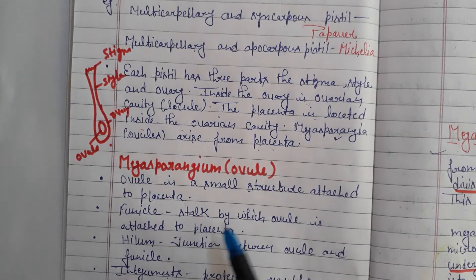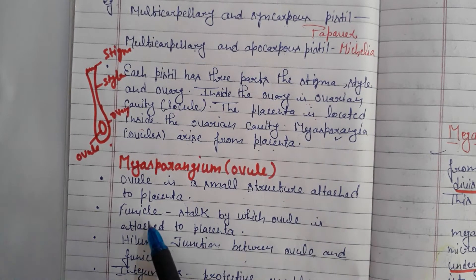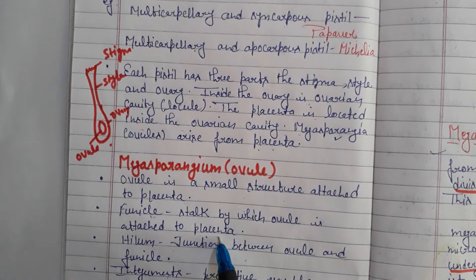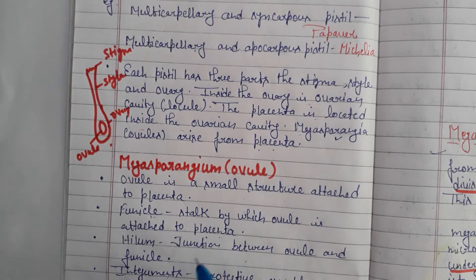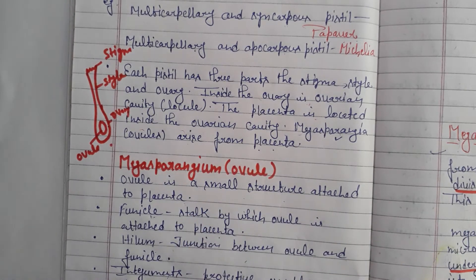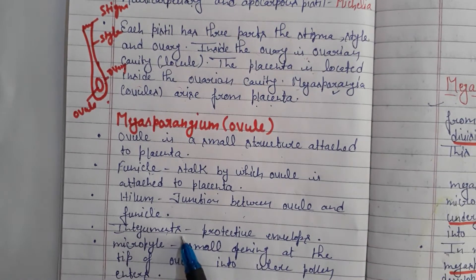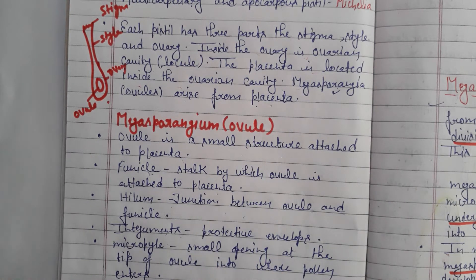The funicle is the stalk by which the ovule is attached to the placenta. The hilum is the connecting link between the placenta and the funicle — it is the junction between the ovule and the funicle.